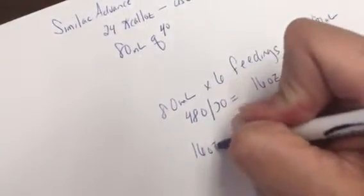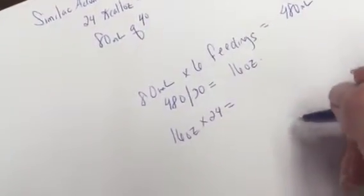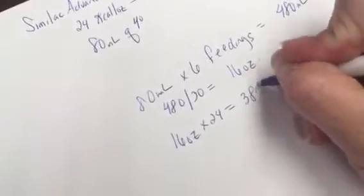How many calories do we need? We need 24 calories per ounce. So 16 ounces times 24 calories per ounce means we are going to need 384 calories.